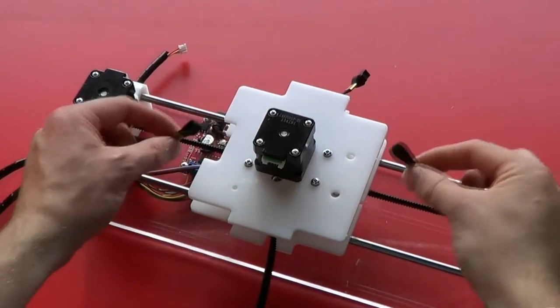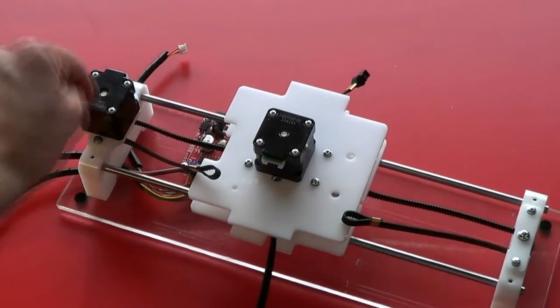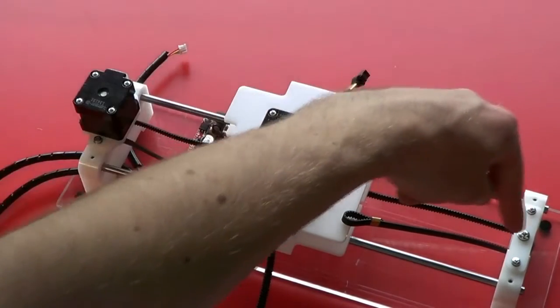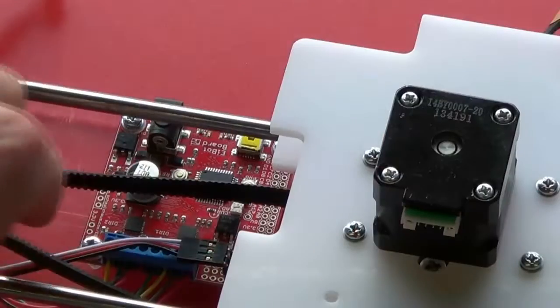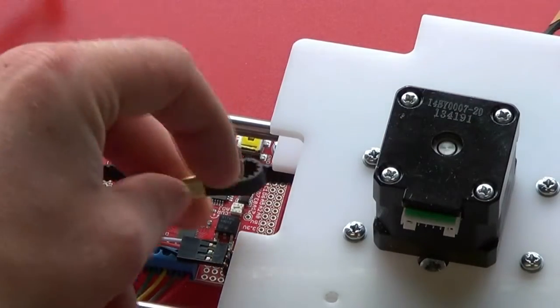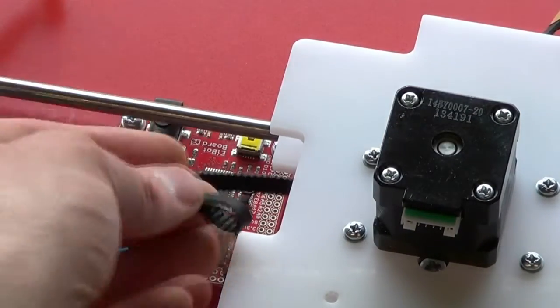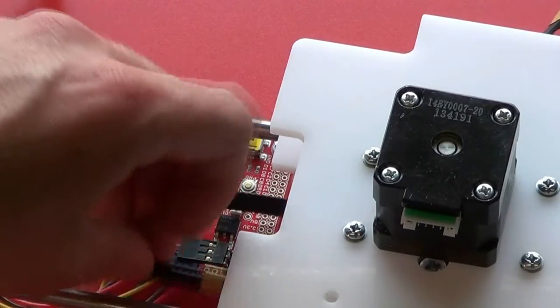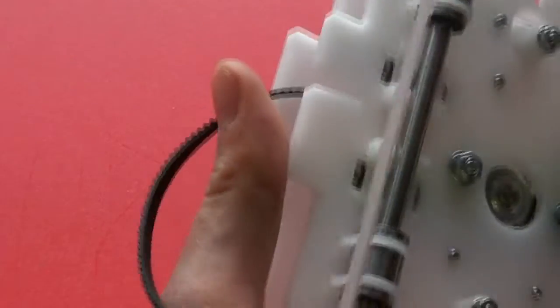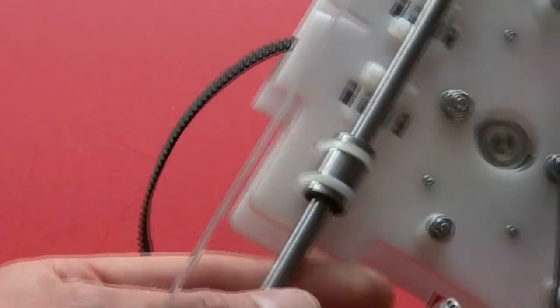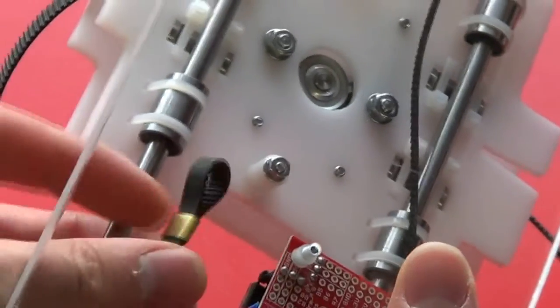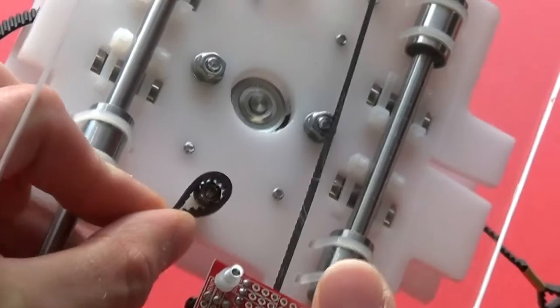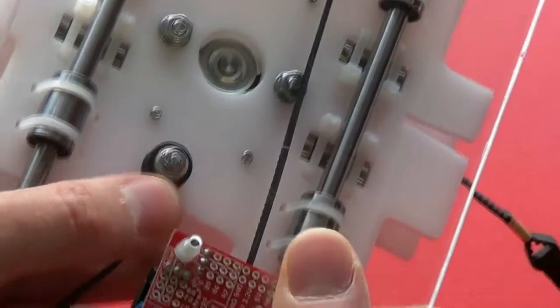So the X belt now forms a continuous loop around the motor, around the idler pulley, and back to the carriage. Take the left-hand loop of the belt and place it over the anchor post. I'm going to turn the whole thing over so you can see underneath. That's the left anchor post, and we want to place the belt loop over that. Like so.